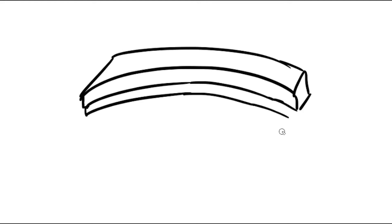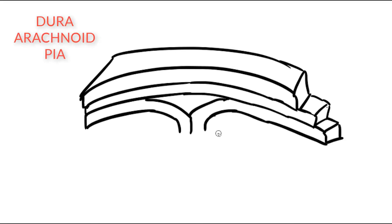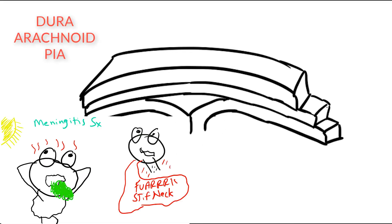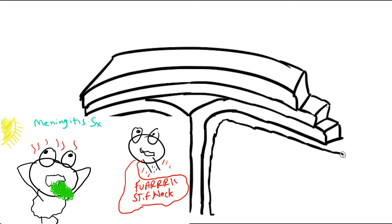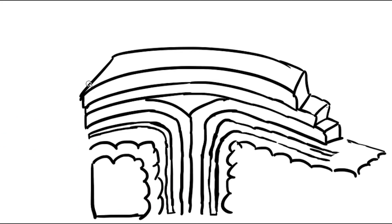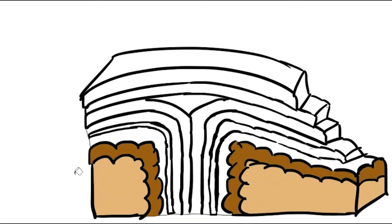Our meninges line the skull and vertebral canal and enclose our brain and spinal cord. They consist of three layers: the dura mater, the arachnoid mater, and the pia mater. Patients with meningitis present with headaches — usually worse when lying down — fevers, nausea, and vomiting. They can also have a stiff and painful neck. In the case of infants, they may not present with a stiff neck all the time, and Kernig's or Brudzinski's sign on physical exam may not come back as positive, but you still need to do the tests either way.